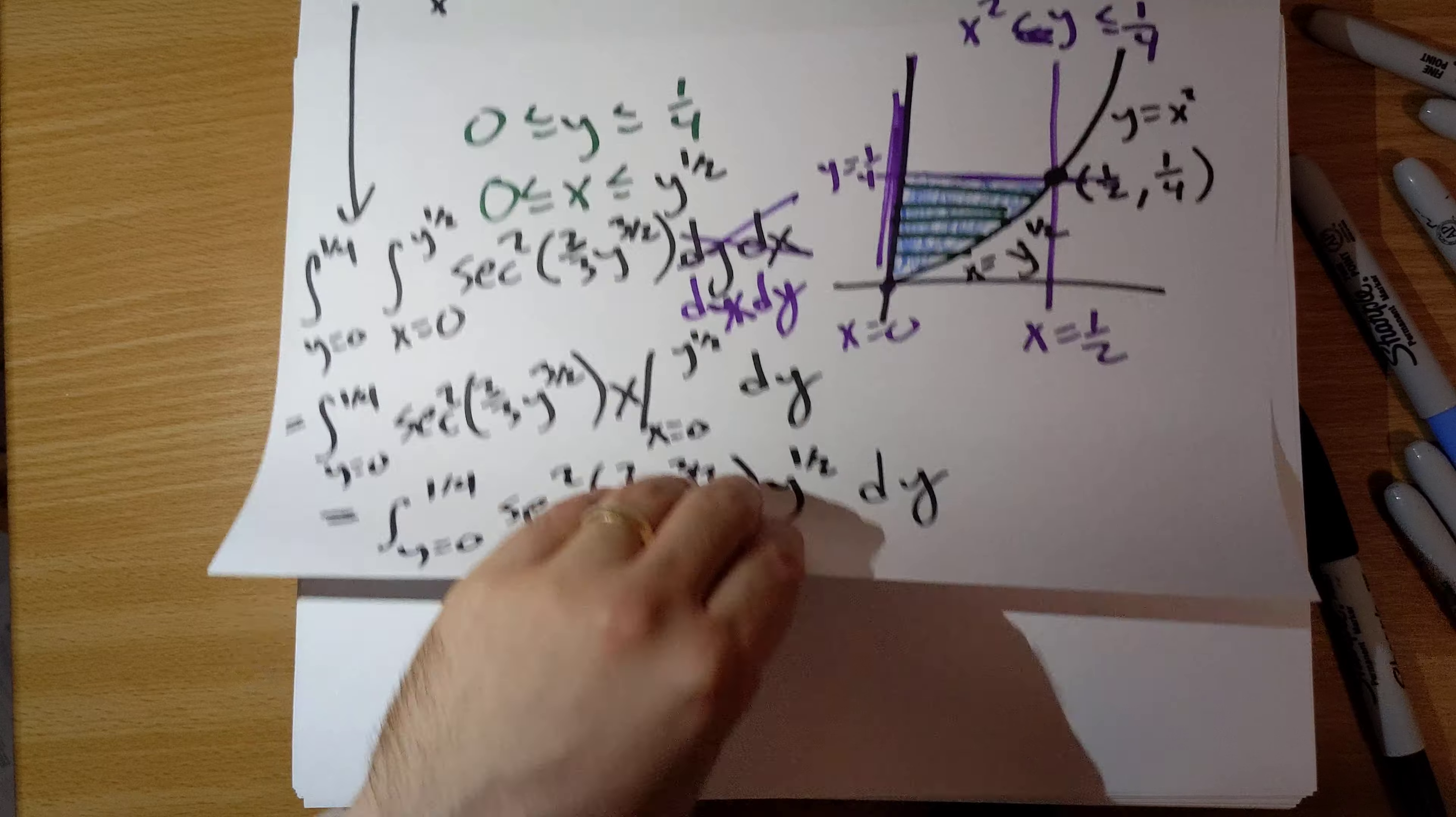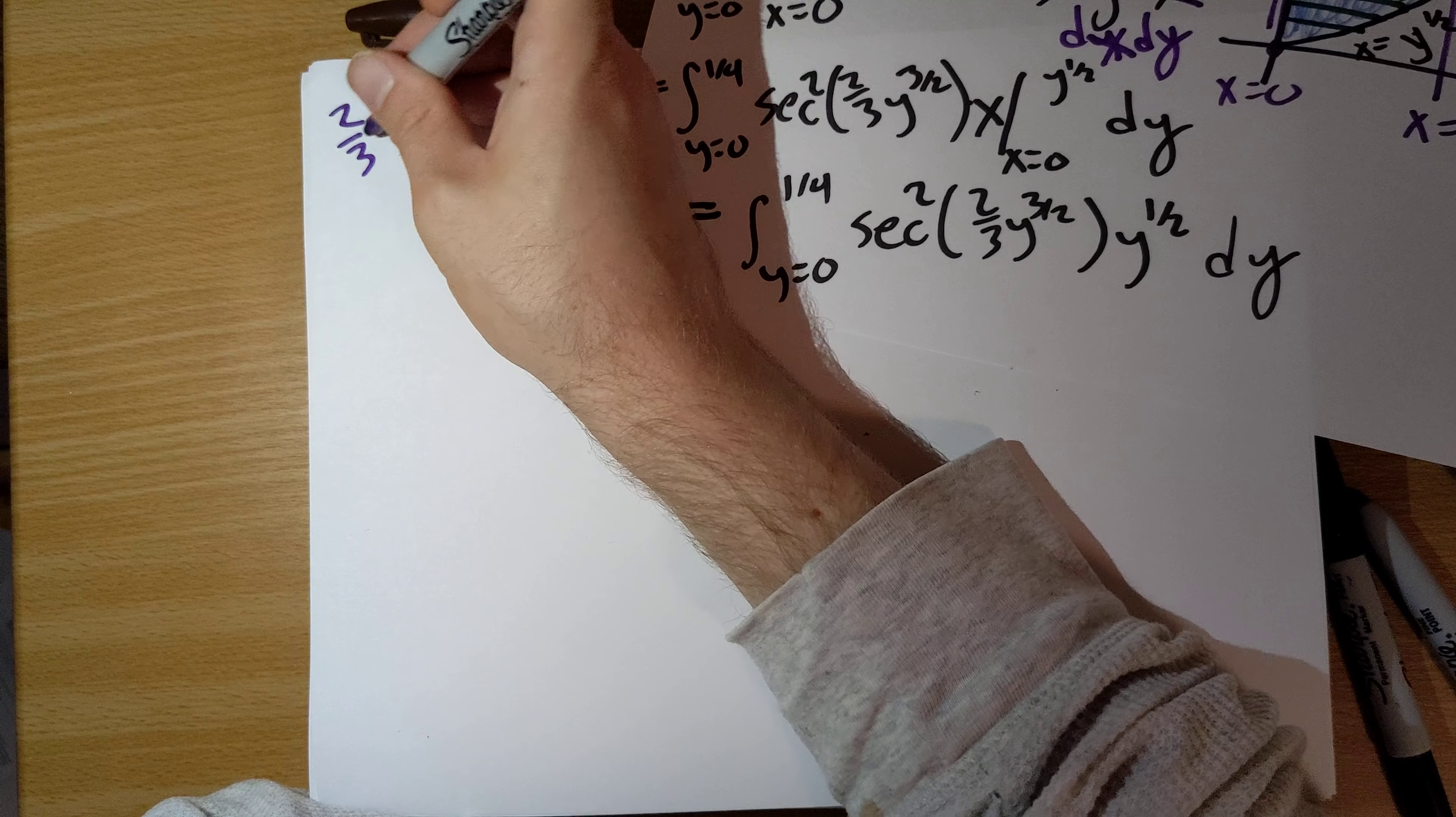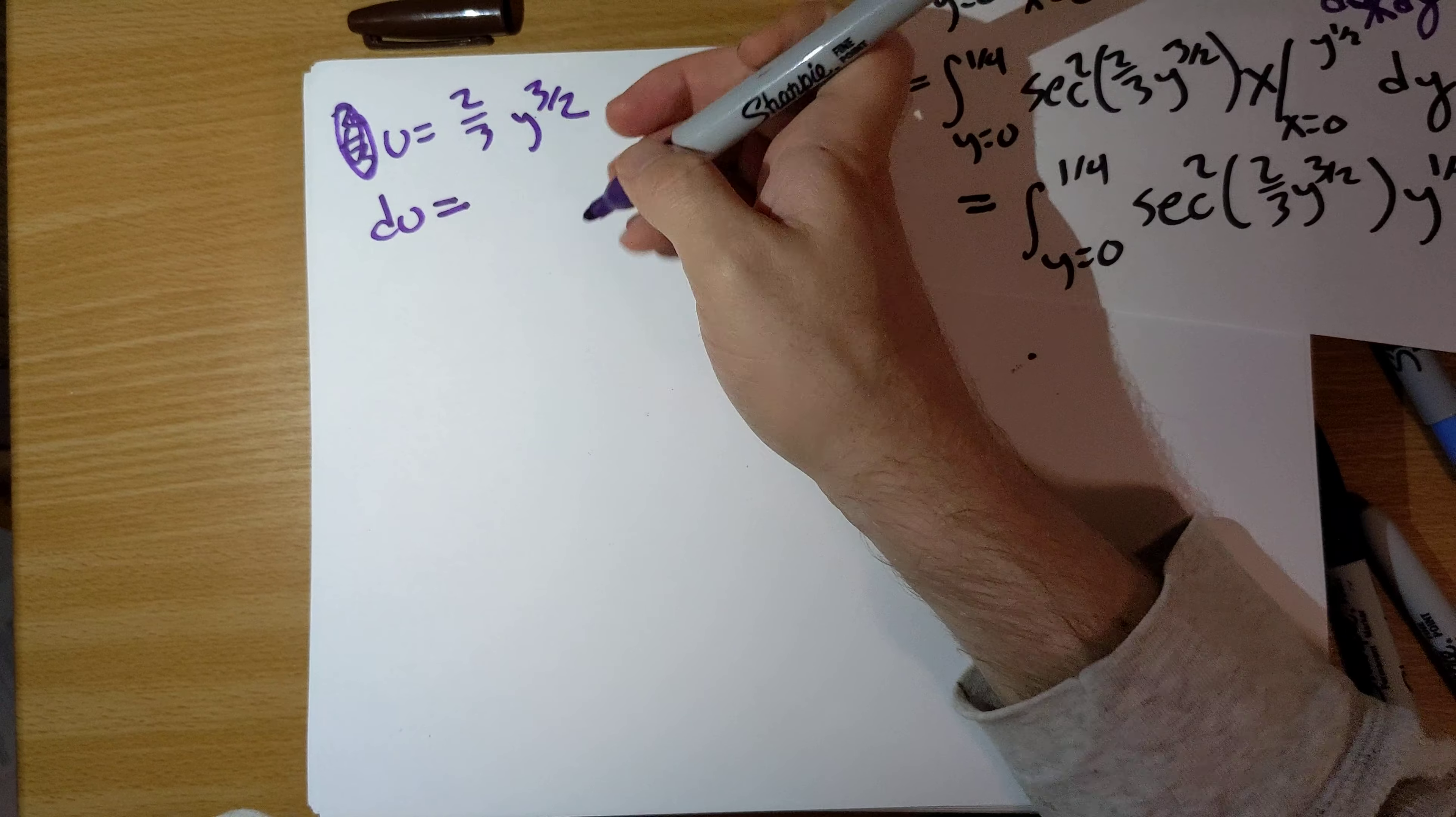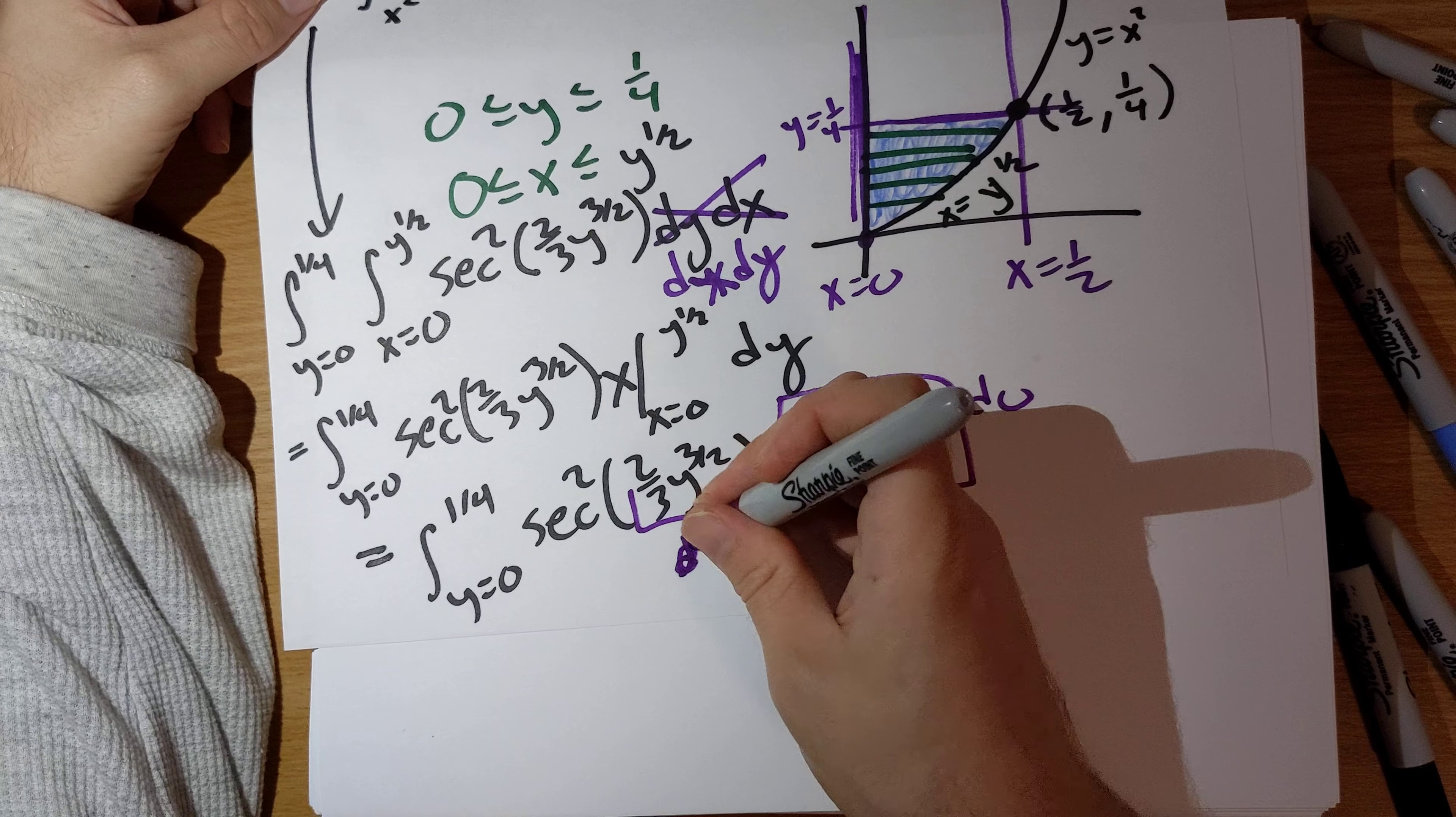Let's make the substitution: u equals 2/3 y to the 3/2. So du then will be y to the 1/2 dy. That's great. This right here is going to be du, and this will be u.